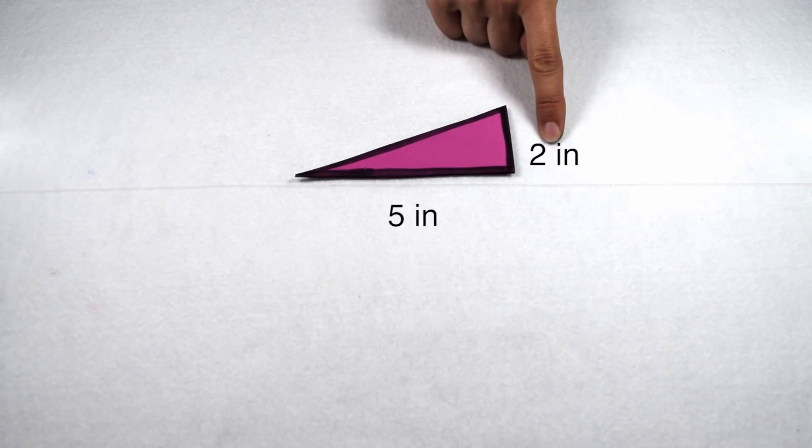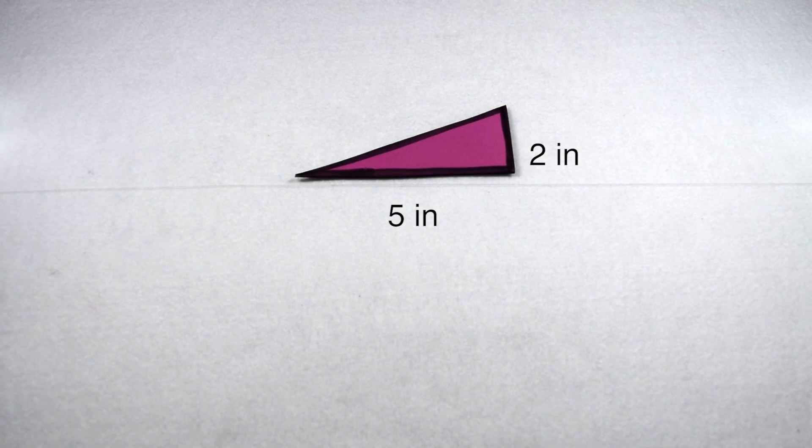When we're looking for the area of a triangle, we want to find out how much space the inside of the figure takes up. We're going to start with a triangle that has a base of 5 inches and a height of 2 inches, but we're actually not going to find the area of that triangle to begin with.